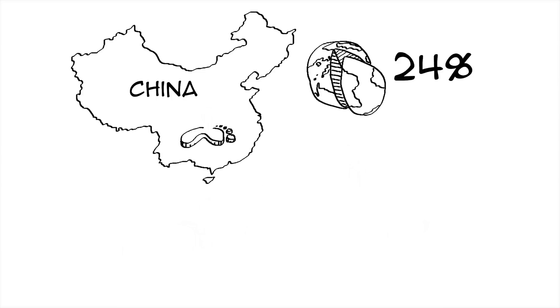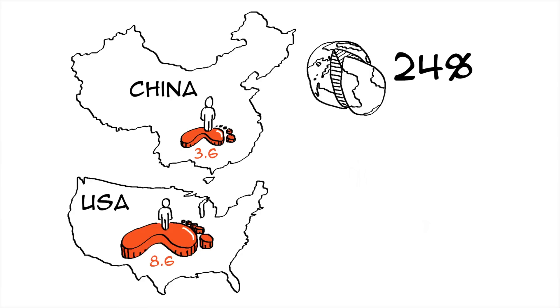However, China's footprint per person is only 3.6 global hectares. By comparison, the footprint per person of the United States is much larger, at 8.6 global hectares.